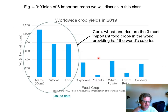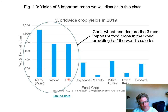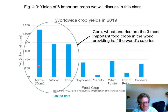Half of all the calories come from these three plants: rice, wheat, and corn. On a worldwide basis, corn, with its ears and many grains, has a bigger yield. Wheat and rice are about the same in terms of yield.